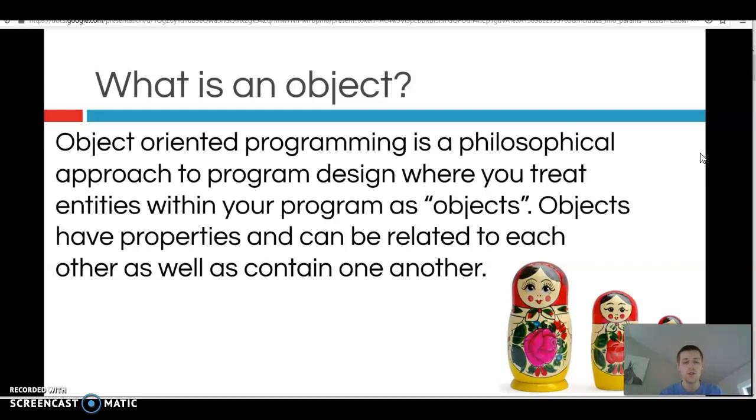And it's this idea that we can use these entities called objects to somehow make our programming easier, more accessible, more friendly to larger programming environments where we might have lots of departments working together and we might want to obfuscate some of our code so everyone can't see it, but also we want to make it accessible so they can still use it. So object oriented design tries to address all of those issues. Objects have properties and can be related to each other as well as contain one another.